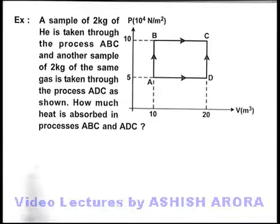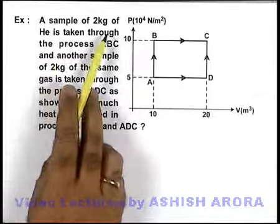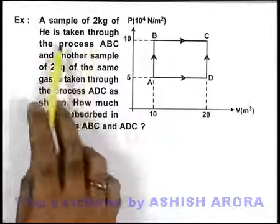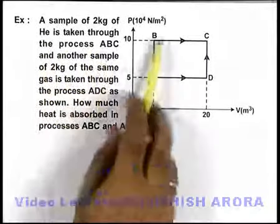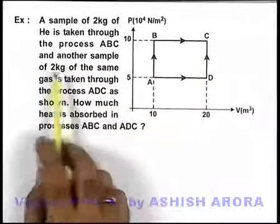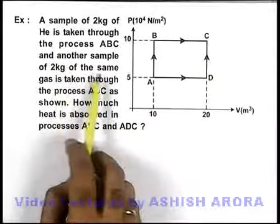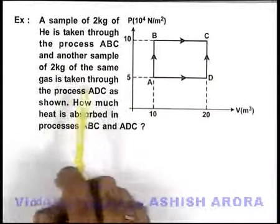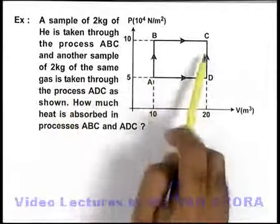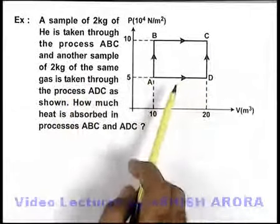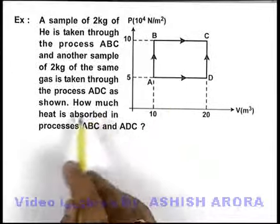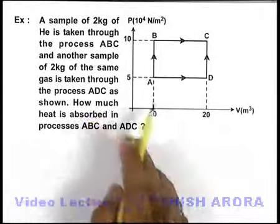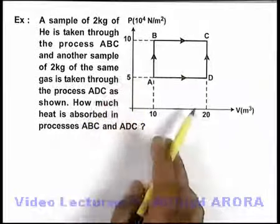In this example, we are given that a sample of 2 kilogram of helium is taken through the process ABC, and another sample of 2 kg of the same gas is taken through the process ADC. We can see that the paths are different. We are required to find how much heat is absorbed in the processes ABC and ADC.